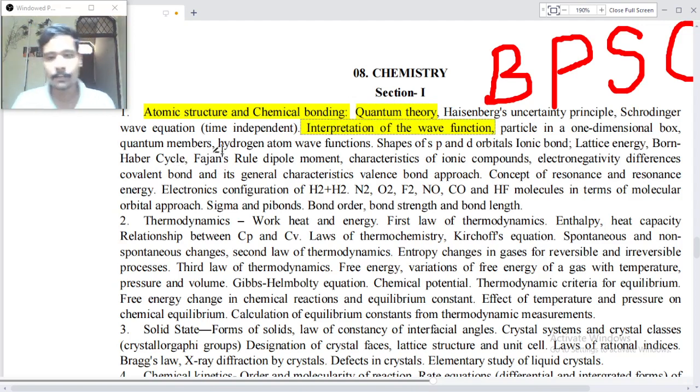Interpretation of the wave functions, particle in a one-dimensional box, quantum numbers, hydrogen atom wave functions, shapes of s p and d orbitals, ionic bonds, lattice energy, Born-Haber cycle, Fajans rule, dipole moment, characteristics of ionic compounds, electronegativity differences, covalent bond and its general characteristics, valence bond approach, concept of resonance and resonance energy.